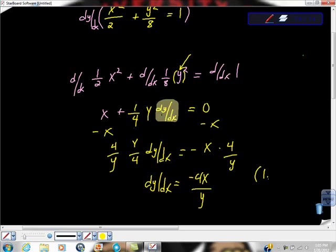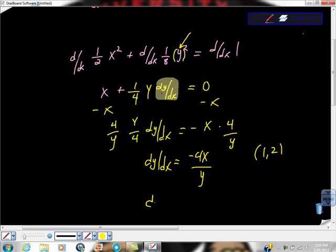So we had the point (1, 2). I'm going to go ahead and substitute in those values and say that dy/dx, the slope at this particular x and y value, is -4 times 1 over 2, otherwise known as -2.